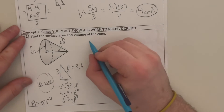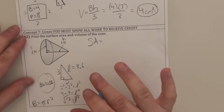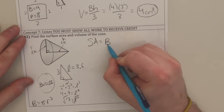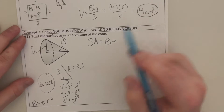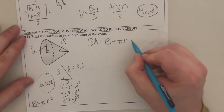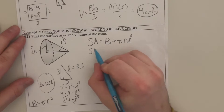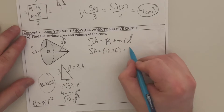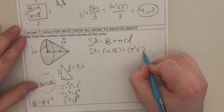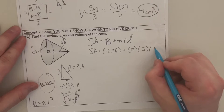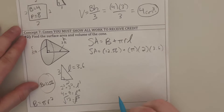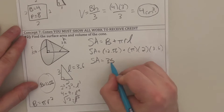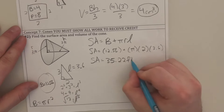Make sure you use your formula. The surface area of this cone has a different formula from the pyramid: it's the area of the base big B, plus the area of the lateral face, which is pi times the radius times the slant height L. So surface area equals about 12.56, plus pi times the radius of 2 times 3.6. When you add these all together, you should get about 35.22 feet squared.